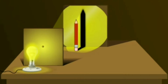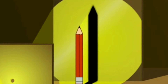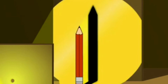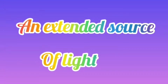Now, pencil is opaque and it does not allow light rays to pass through it. So, a shadow is formed on a screen — a region on the screen that receives no light.